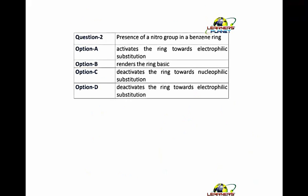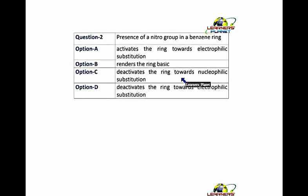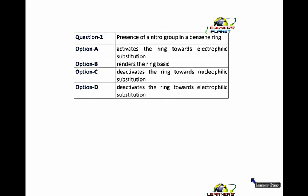Let's take up our next question. The question states: the presence of a nitro-group in a benzene ring — does it activate the ring towards electrophilic substitution reaction, render the ring basic, deactivate the ring towards electrophilic substitution reaction, or deactivate the ring towards nucleophilic substitution reaction? The nitro-group is a deactivating group — it deactivates the ring towards electrophilic substitution reaction.